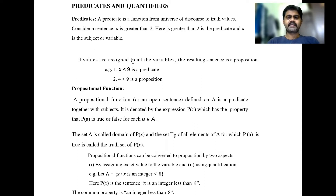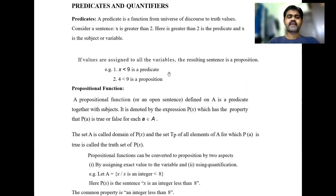If values are assigned to all the variables, the resulting sentence is a proposition. You can get this in a one-mark or two-mark question — they may ask what is a predicate or what is a proposition. A predicate is a function from the universe of discourse to truth values. If we say 'x is greater than 2', greater than 2 is the predicate and x is the subject or variable. If values are assigned to all the variables, the resulting sentence is a proposition.